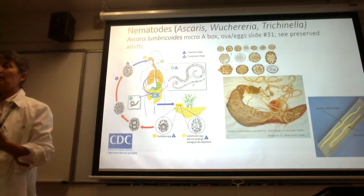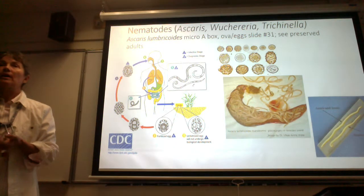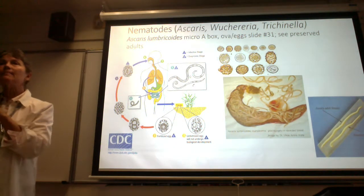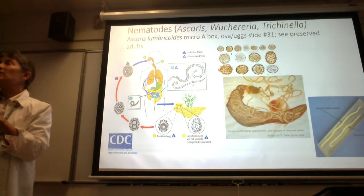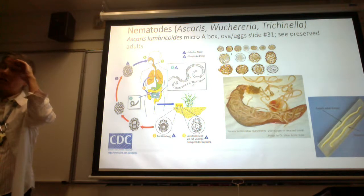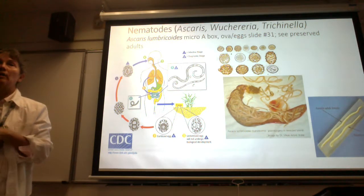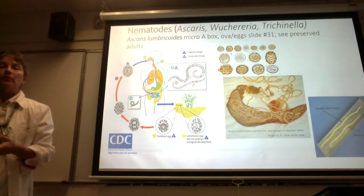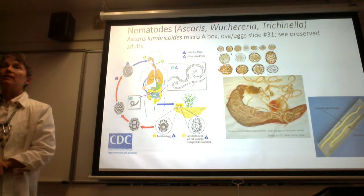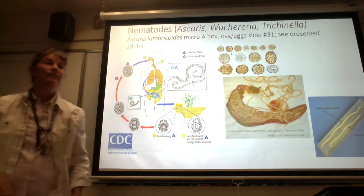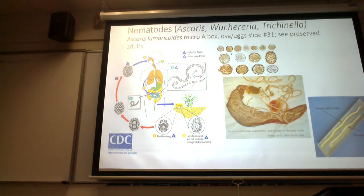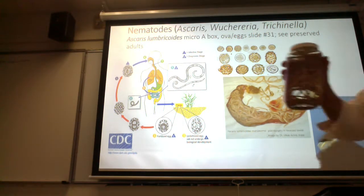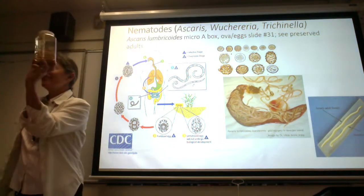So we're going to move to the next parasitic helminth, which is a pretty common one. We have it here in the United States. Probably the southeastern United States has higher prevalence - one reason is the nice, warm, moist weather that helps the eggs survive in the soil for long periods of time. This is the start of our nematodes. What's a common name for nematodes? Roundworms. The first nematode is Ascaris lumbricoides. Right after breakfast - here are our adult Ascaris lumbricoides. I always think they look like spaghetti.